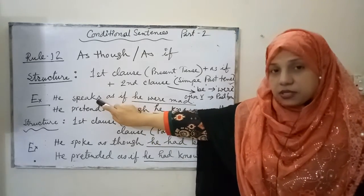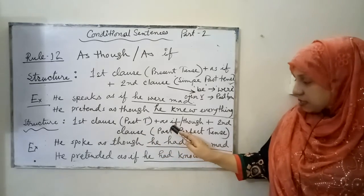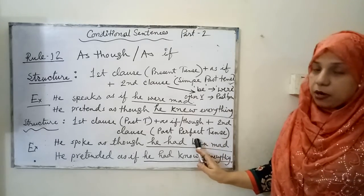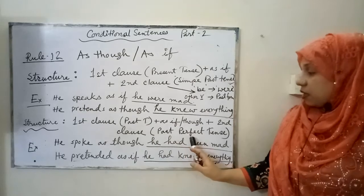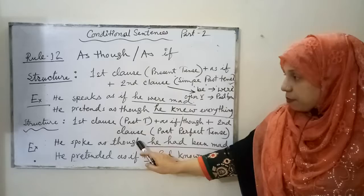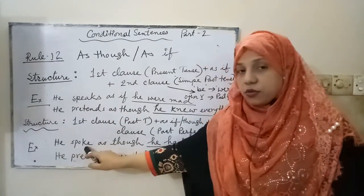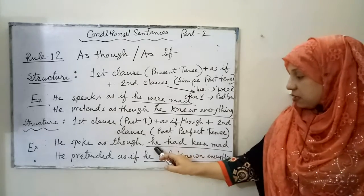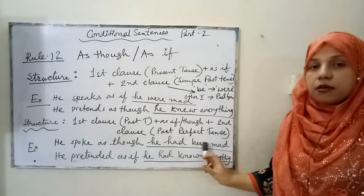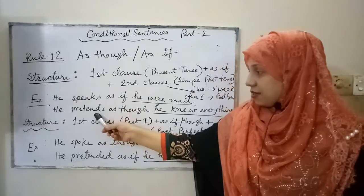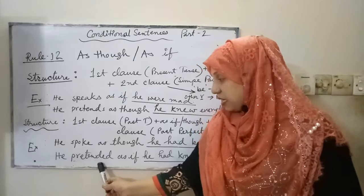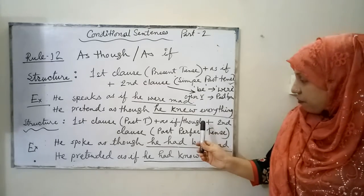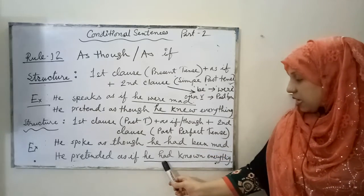Similarly, if the first clause is in the past tense and 'as if' or 'as though' is present, then the second clause will be in the past perfect tense. For example: 'He spoke as though he had been mad.' And: 'He pretended as if he had known everything' — because the main clause is in the past tense, we must use past perfect tense in the second clause.